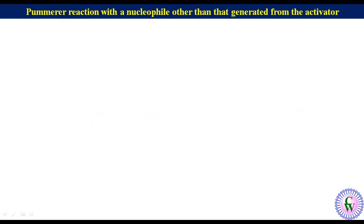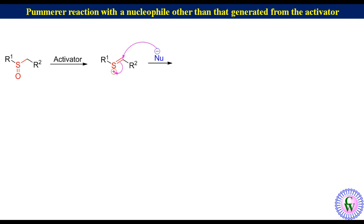Pummerer reaction with a nucleophile other than that generated from the activator: we have seen that the nucleophile generated from the activator itself attacks the electrophile. But if we add a nucleophile, or there is already a nucleophile in the molecule which is stronger than the generated nucleophile, then we would get the product with the stronger nucleophile. After addition of the activator, there will be formation of an electrophile, and the added nucleophile will attack it to produce the product.